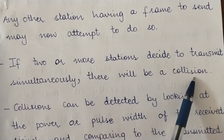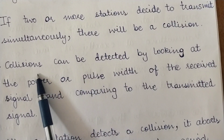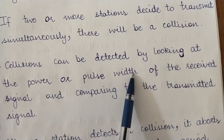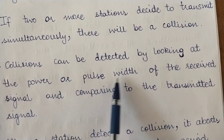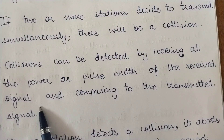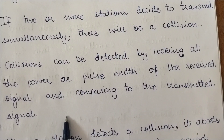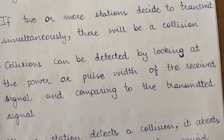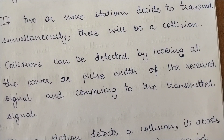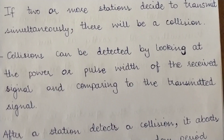Collisions can be detected by looking at the power or pulse width of the received signal. The pulse width of the received signal is compared to the transmitted signal. If the pulse widths are the same, no collision has taken place. If they are different, a collision has occurred, and no further transmission is allowed — the stations abort their transmission immediately.